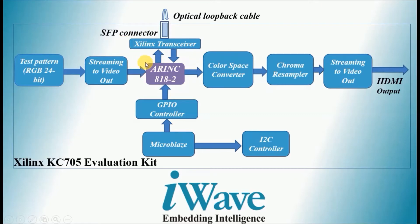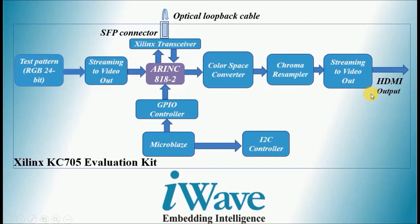The data from the ARINC 818 IP transmitter will be sent to the SFP module using transceiver TX line, and the looped back data received using the RX line will be sent back to the ARINC 818 IP receiver. This data is deframed and sent to Xilinx VIP cores to convert RGB 4:4:4 bit data to YCbCr 4:2:2 data, as expected by the HDMI transmitter present on the board.